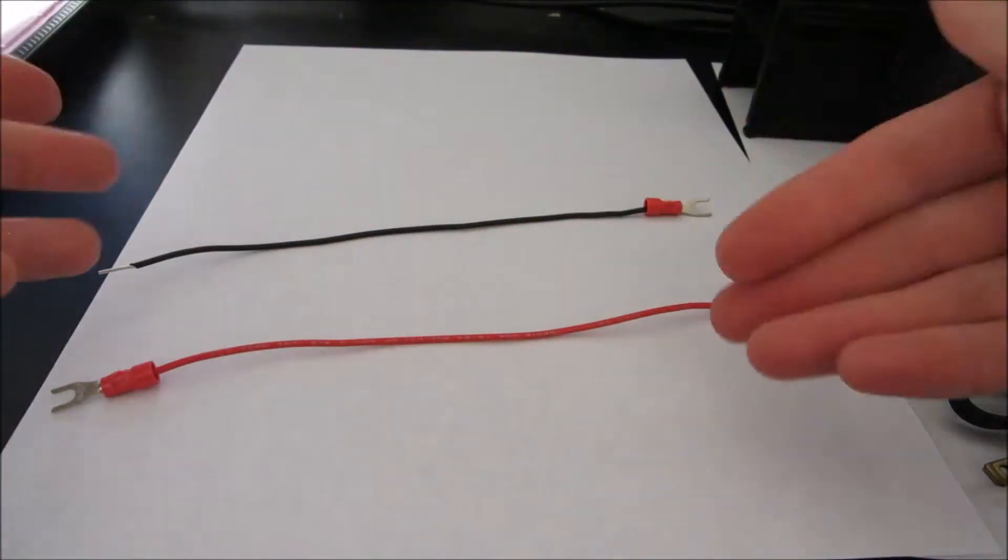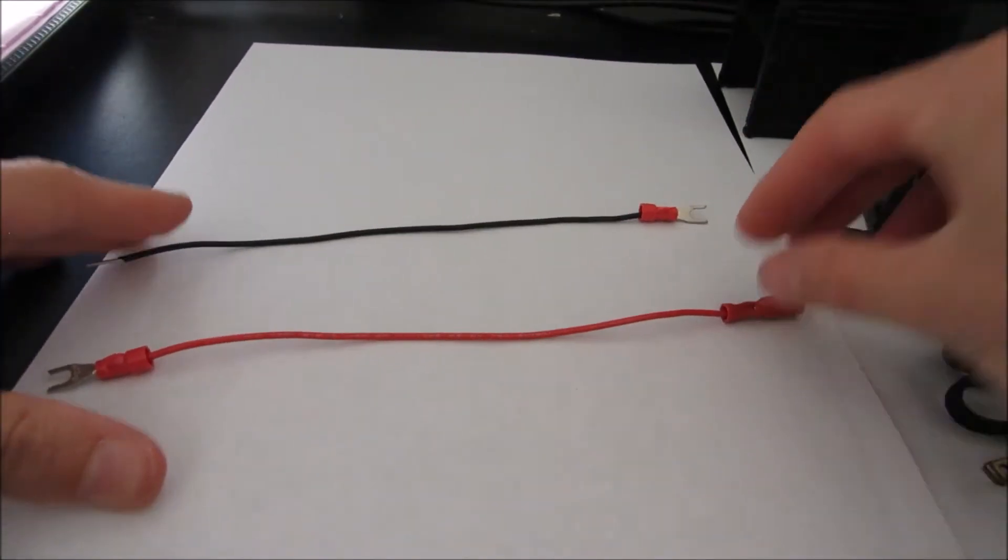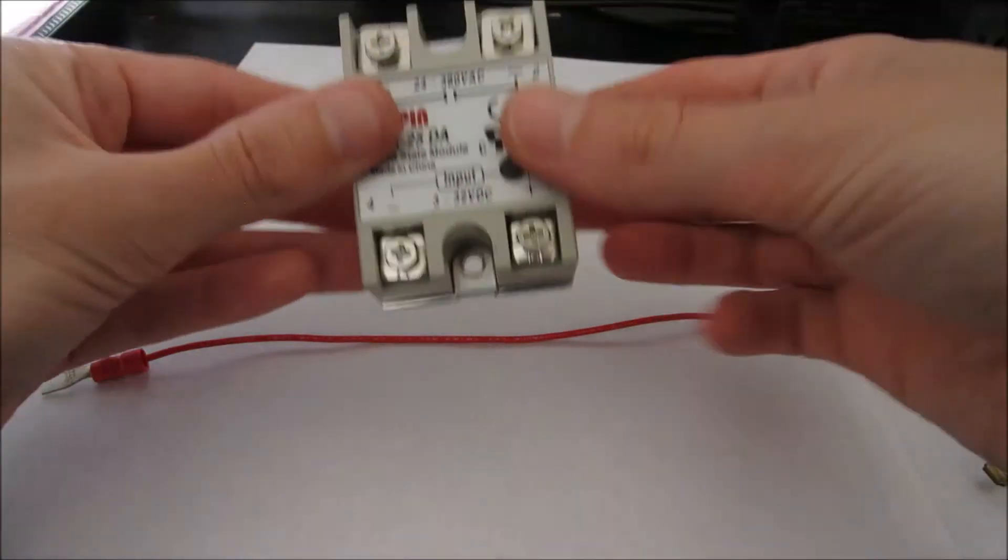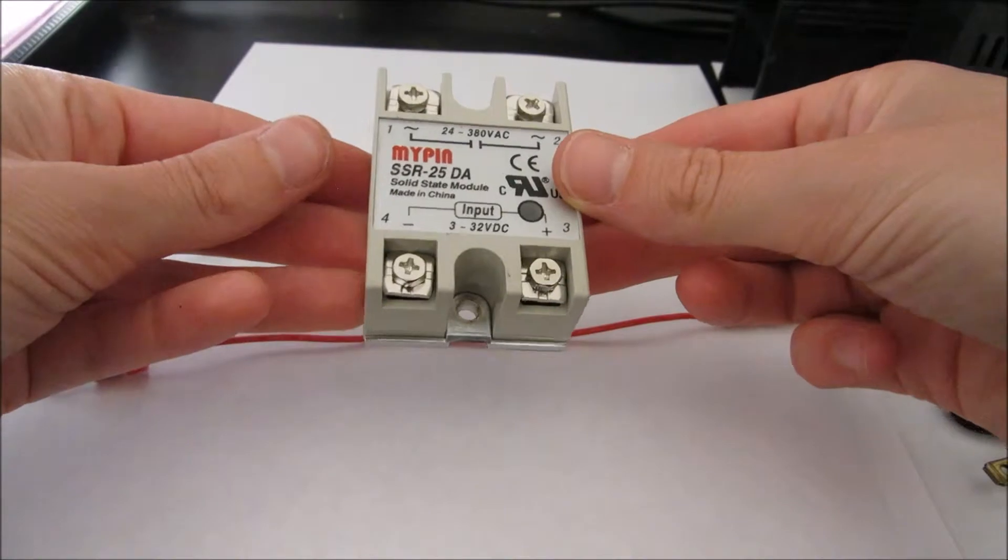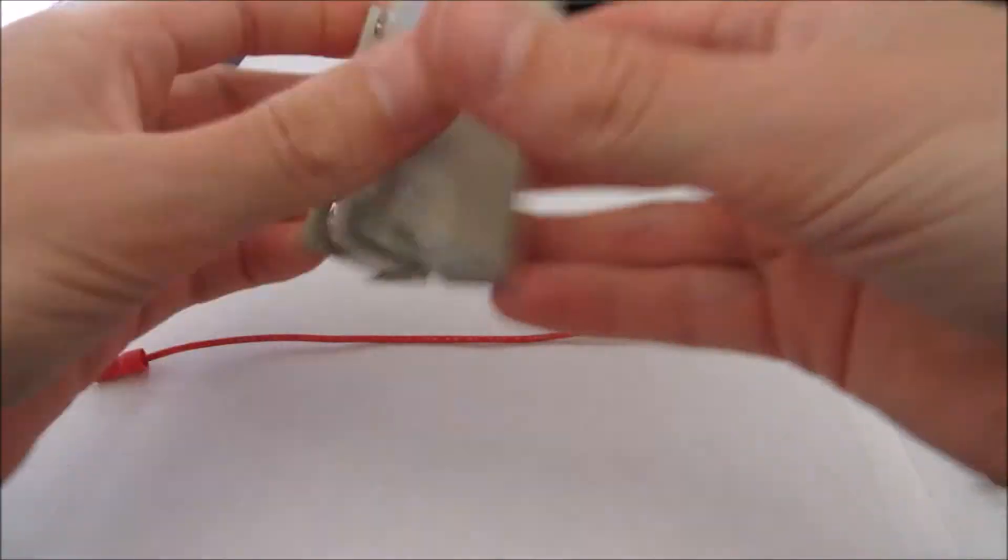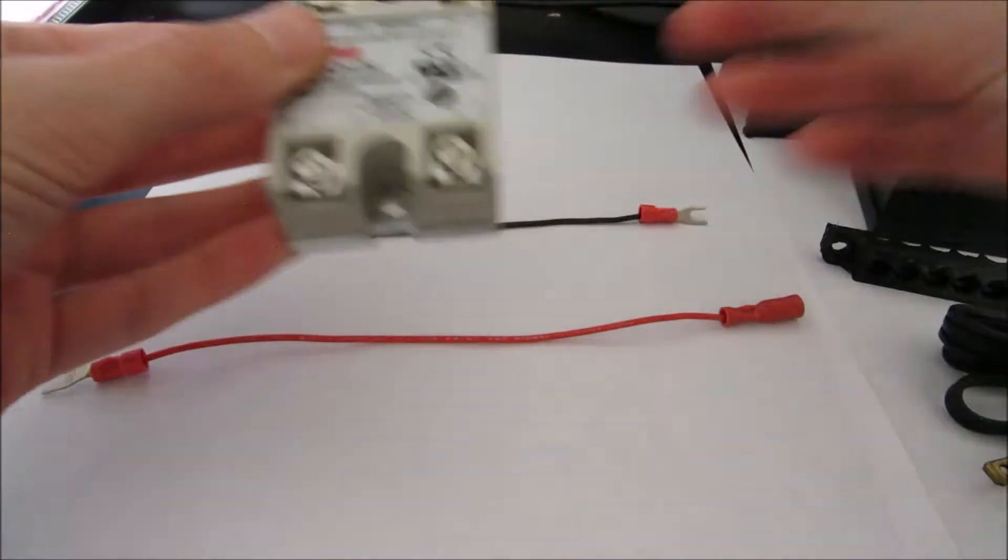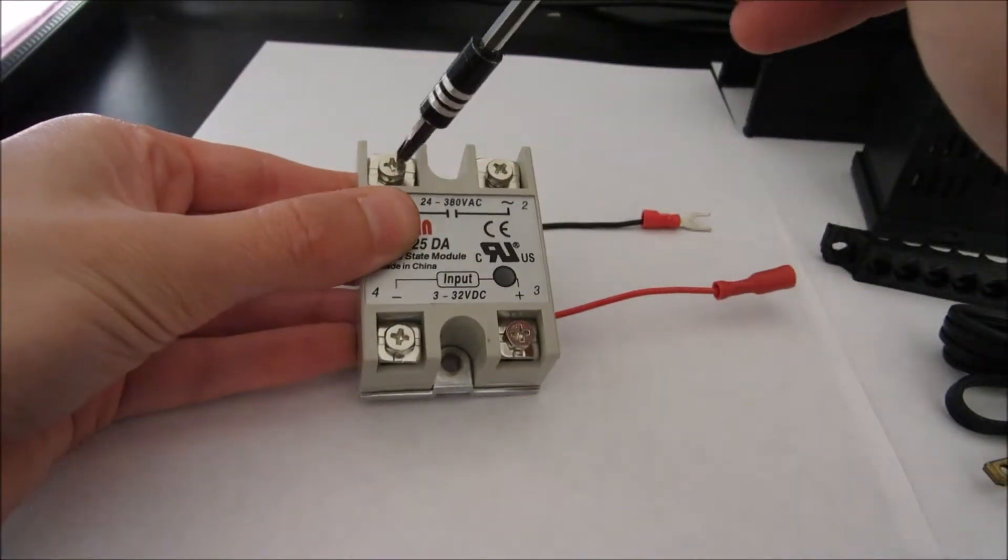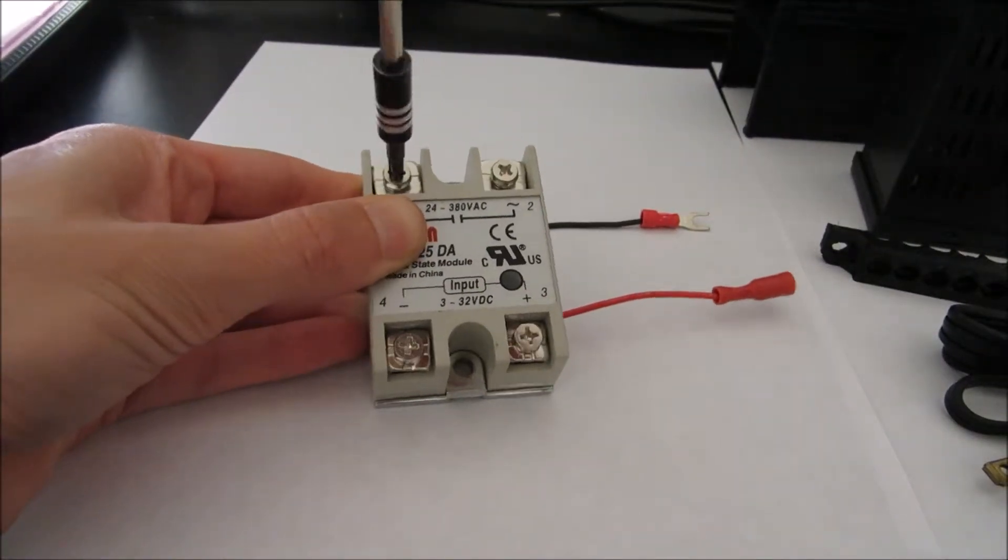So we have our wires now set for step one. So let's go ahead and grab our solid state module here, this little relay box, and unscrew using our screwdriver the number one and number two.